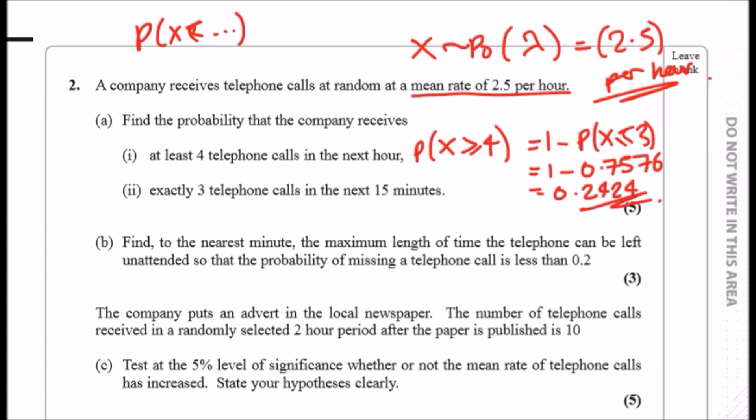Easy. Now find it, now part two: exactly three telephone calls in the next 15 minutes. So this is the probability, let me change the color pen, that x equals three in the next 15 minutes. So this is a new distribution. Notice how the original is per hour, this is 15 minutes, so this is four times less, so you'd have to divide this by four to make it correct. So in your calculator do 2.5 over 4, this will give us a mean rate of 0.625. So now we have a new distribution, a Poisson with mean 0.625 per 15 minutes. Always note these down.